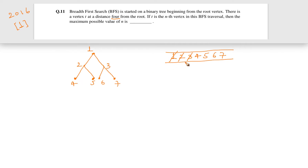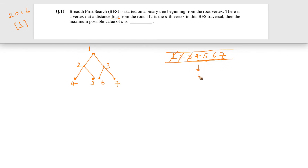So vertex 4 is actually the fourth vertex in the BFS traversal, and vertex 7 is the seventh vertex in the BFS traversal. We are interested in what is the maximum possible value of the ordering. In this case we are considering distance 2 — so at distance 2, vertices 4, 5, 6, and 7 are there. Among these, the maximum value of the BFS order is 7 and the minimum is 4. So a vertex at distance 2 appears at minimum order 4 and maximum order 7.